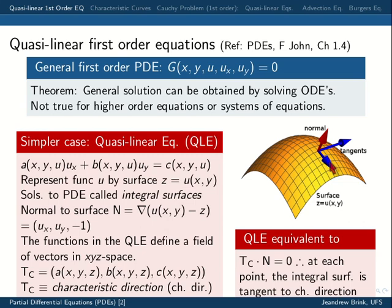We looked at what the quasi-linear equation actually means geometrically. We made a vector Tc from the functions A(x,y,z), B(x,y,z), C(x,y,z) — always replacing u with z — and called it the characteristic direction, an arrow in three-dimensional space. We showed our quasi-linear equation is equivalent to the statement that this characteristic vector dotted with the normal equals zero.